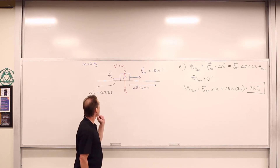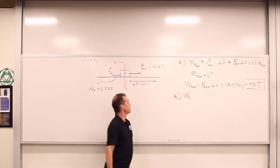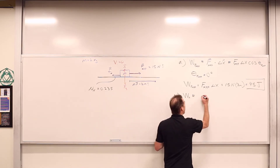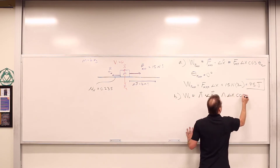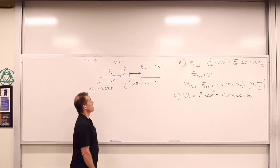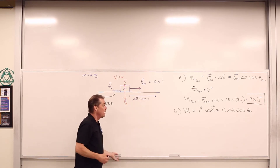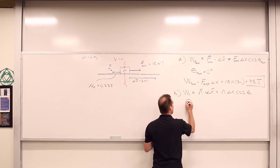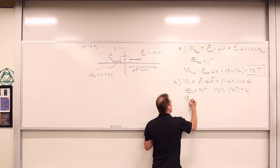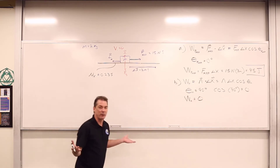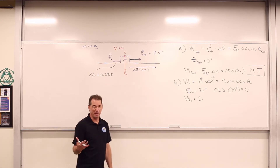Let's look at the work done by the normal force. The work done by the normal force is N · Δx · cos(θ_N). The normal force is in the j-hat direction and the displacement is in the i-hat direction, so the angle between them is 90 degrees. The cosine of 90 degrees is zero, so the work done by the normal force is zero — it does no work because there is no displacement in the direction of the normal force.